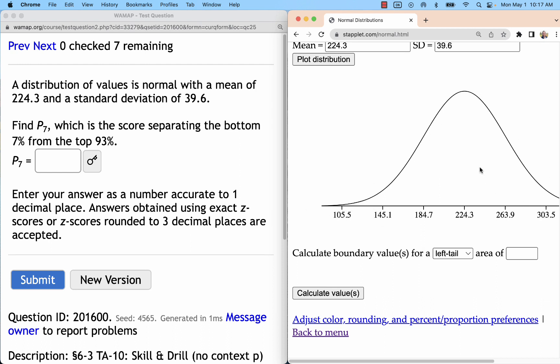We can do either a left tail or right tail depending on which number we use. So a P is a percentile. We're saying seventh percentile, and typically we'll think of that as a left area.